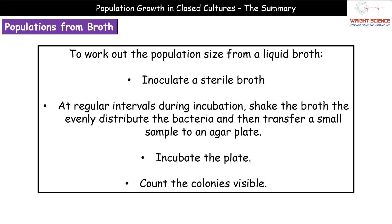The first thing we're going to look at is how we can work out population sizes. If we start off with a liquid broth, the first thing we need is a sterile broth, as established in our previous sessions, and we then need to inoculate that with our particular microorganism. At regular intervals throughout the incubation process, we take the broth and give it a good shake. The purpose of shaking is to evenly distribute the bacteria - if we just left it they would settle to the bottom, so a sample wouldn't be proportional. Shaking distributes them evenly so our small sample is representative. We then transfer this sample onto an agar plate, incubate the plate, and count how many colonies are visible.